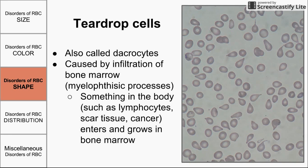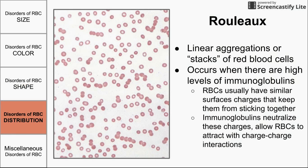Teardrop cells are easy to remember because they look like teardrops. They are formed when the bone marrow is infiltrated with something that should not be there — such as scar tissue, cancerous cells, lymphocytes, or even bacteria. The bone marrow is where red blood cells are produced — it's the site of erythropoiesis. If something is invading the bone marrow, it malforms the shape of the red blood cells coming out, producing teardrop cells.